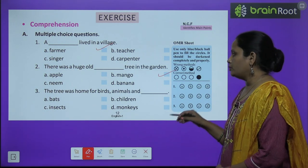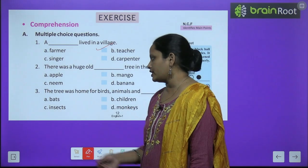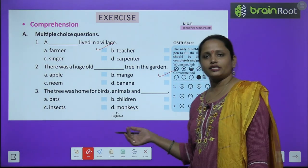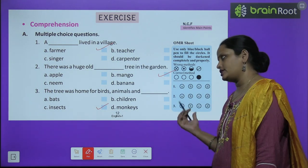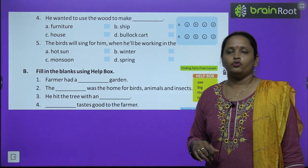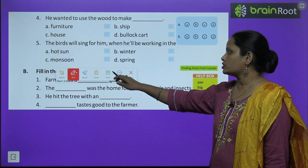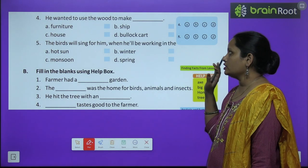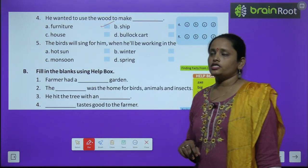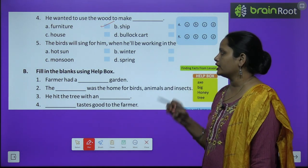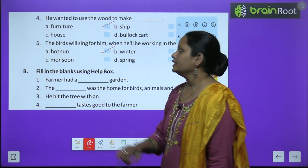The tree was home for birds, animals and — ये जो tree था, ये किसका किसका घर था? Birds का, animals का और — bats रहते थे? Children रहते थे? Insects रहते थे? या monkey रहते थे? So the correct answer is insects. Next, fourth question: he wanted to use the wood to make — वो farmer उस wood से क्या बनाना चाहता था? Furniture, ship, house, या bullock cart. तो वो furniture बनाना चाहता था. The birds will sing for him when he will be walking in the hot sun.